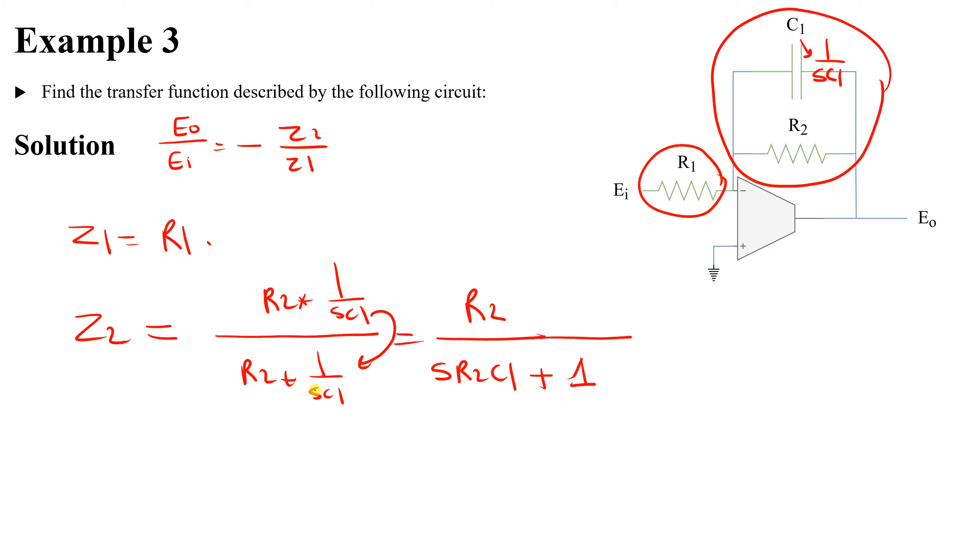So we have Z2 and Z1. So we will equal to negative Z2, which is R2 over R2C1s plus one, and Z1, which is R1. So we will take this down here.